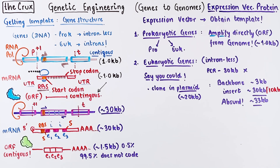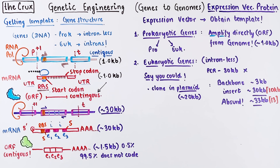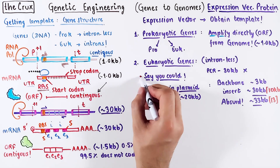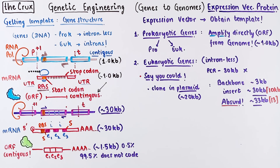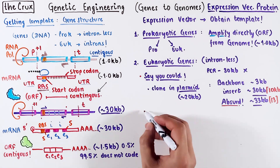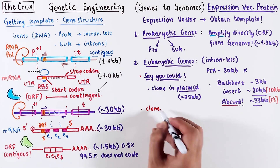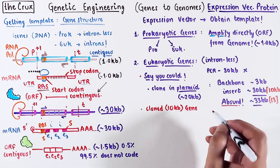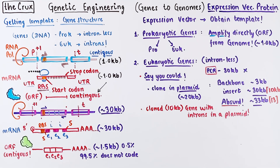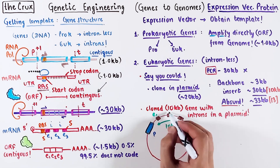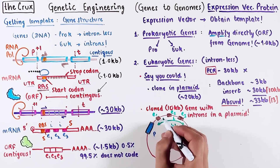But what if the insert was 10 kb instead of 30 kb? In that case, the final plasmid is 13 kb — this seems more reasonable. This is still hypothetical, because our PCR comes right off the DNA. In a moment, you will find out why this is the wrong way. So you've cloned a 10 kb long gene with introns in a plasmid — here's the expected structure of our hypothetical final plasmid.